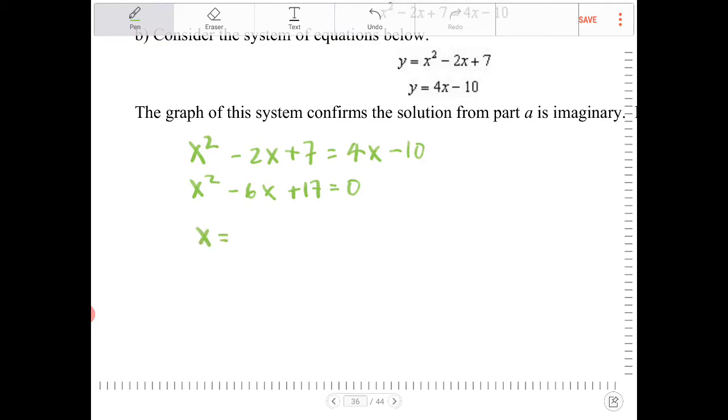And the quadratic formula says this. We have negative b, so it's going to be positive 6 then, plus or minus square root. b squared minus 4ac, so 6 squared, so that's 36, minus 4ac, so minus 4 times 17.